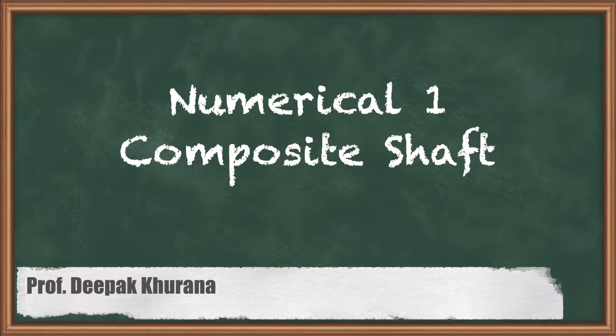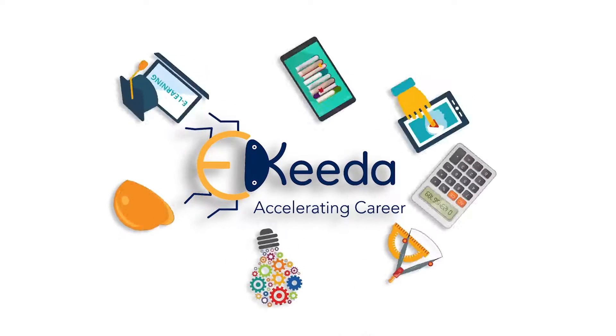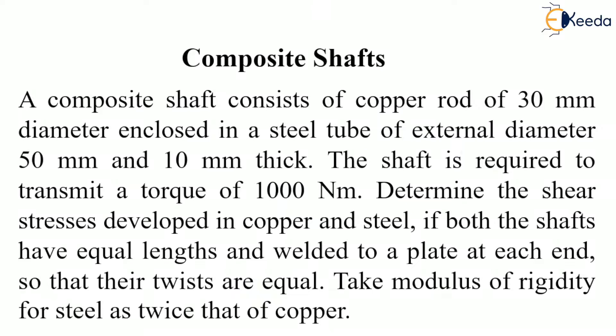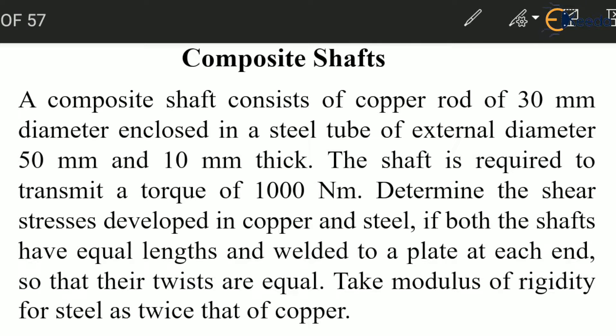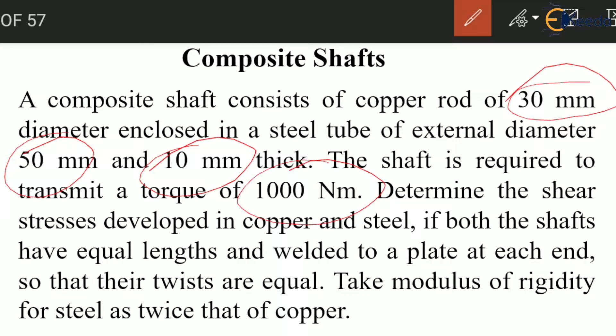Hello students. In this session let us solve one more question of composite shaft. A composite shaft is given where there is a copper rod of 30 mm diameter, a steel tube whose external diameter is 50 mm and internal diameter is 30 mm because it is 10 mm thick. The shaft is required to transmit a torque of 1000 Nm. We have to determine the shear stress developed in copper and in steel.